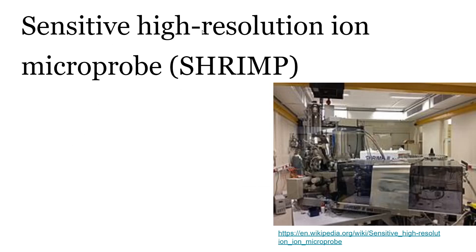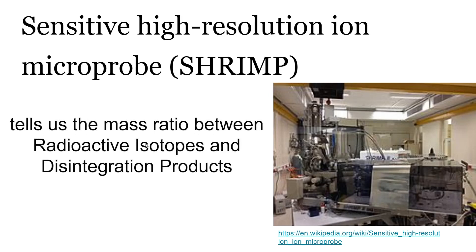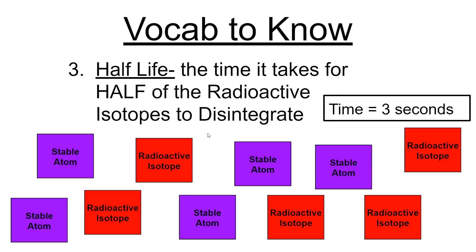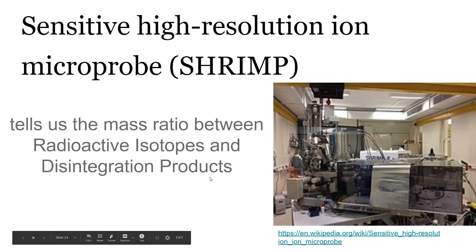Back to the Sensitive High Resolution Ion Microprobe — the SHRIMP. This tells us the mass ratio between radioactive isotope and disintegration products. The radioactive isotope is the atom before it disintegrates; the product is after. So it tells us the ratio of how many stable atoms per how many radioactive isotopes. When it gives us the ratio, you can get the half-life and therefore the amount of time the rock or fossil has been there — its absolute age.